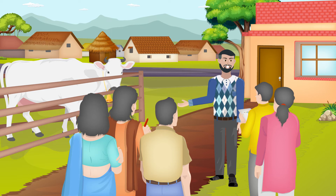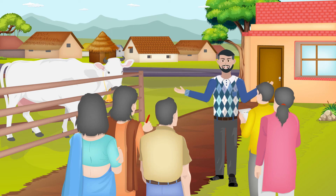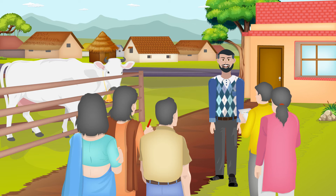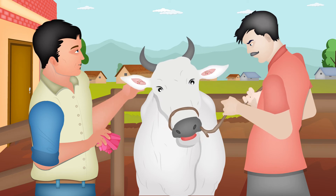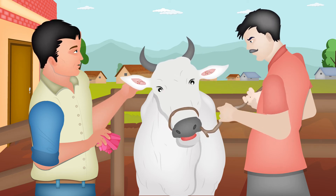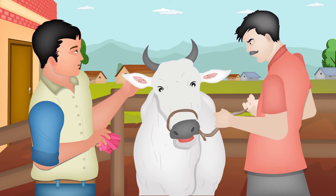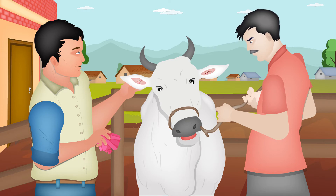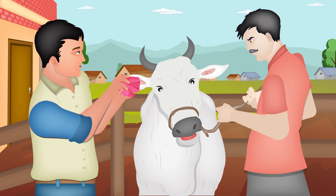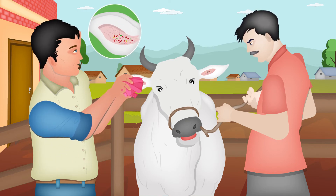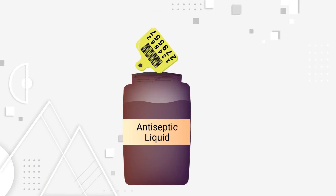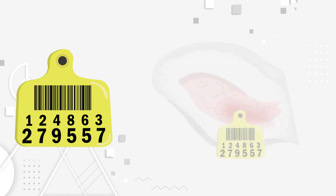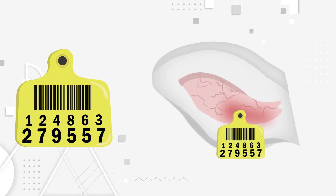To begin with, the animal has to be caught and held from the head by an individual familiar to the animal, in such a way that it is unable to move its head for a while. The area meant to be tagged should first be cleansed with a strong antiseptic. The tag itself should also be soaked in antiseptic liquid to help in healing the tagged area.